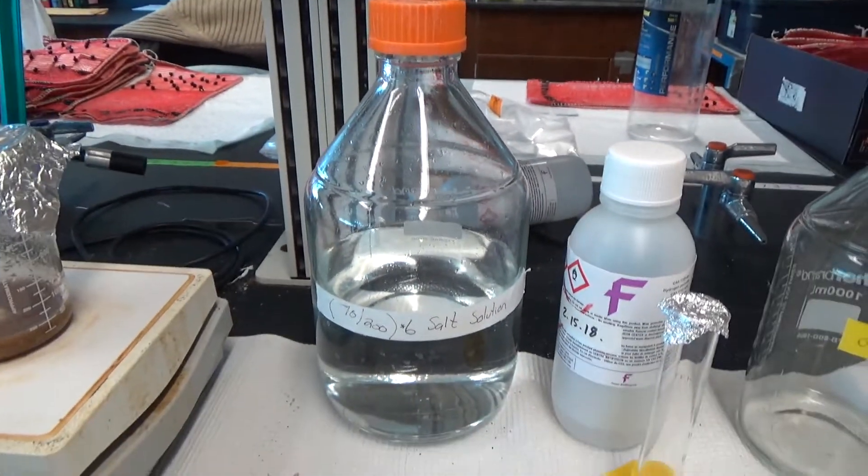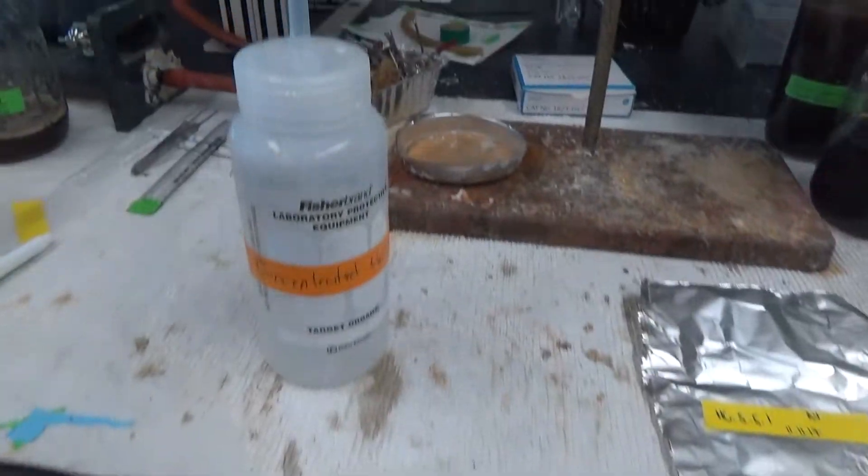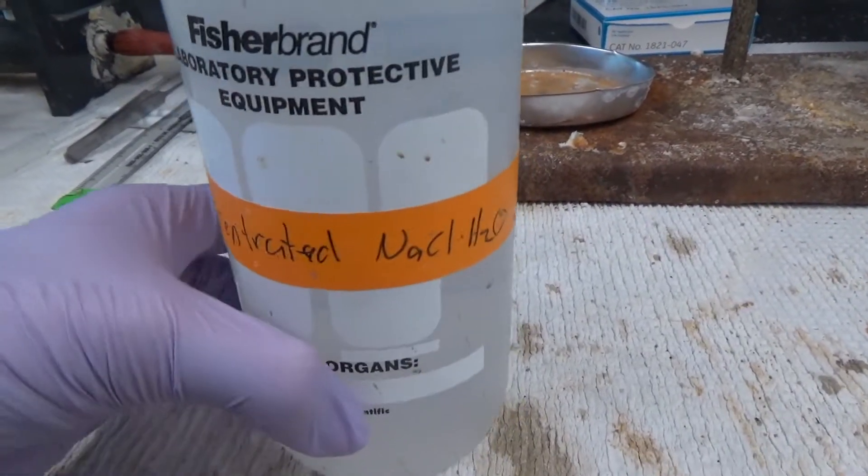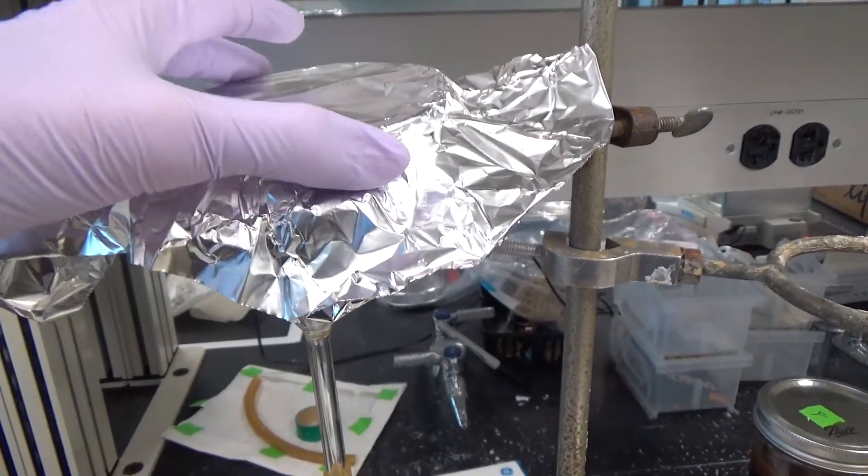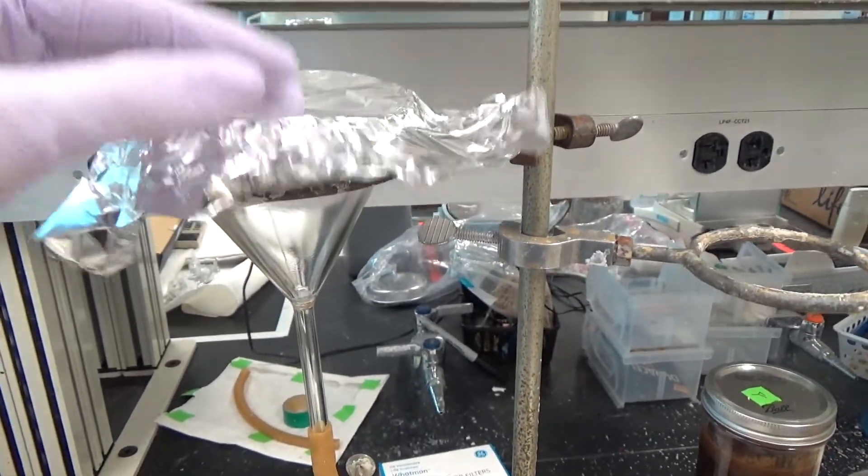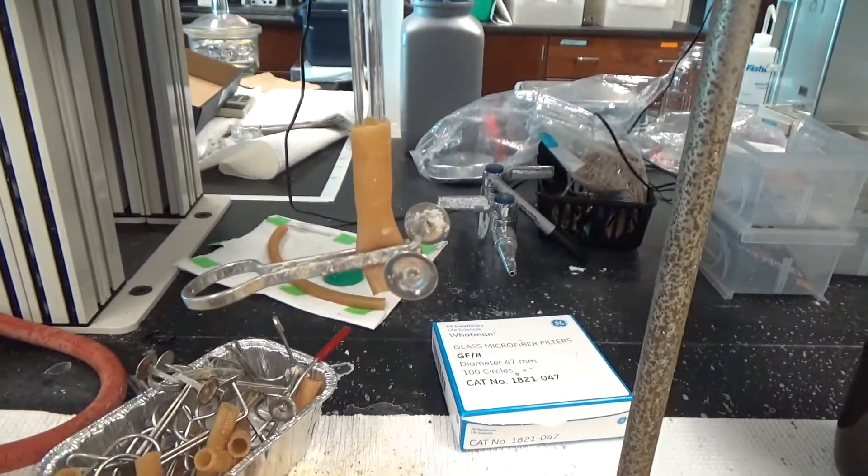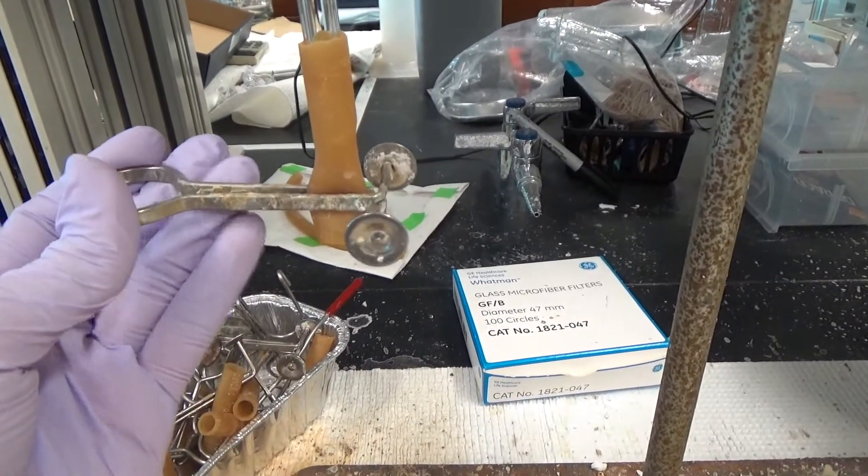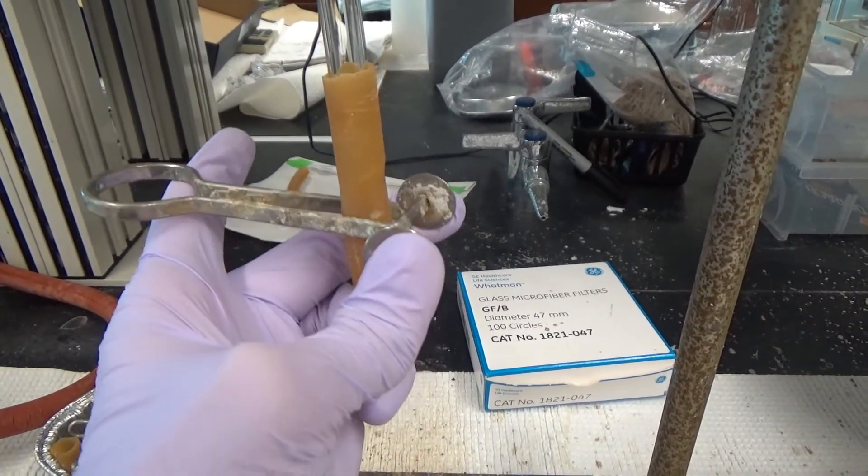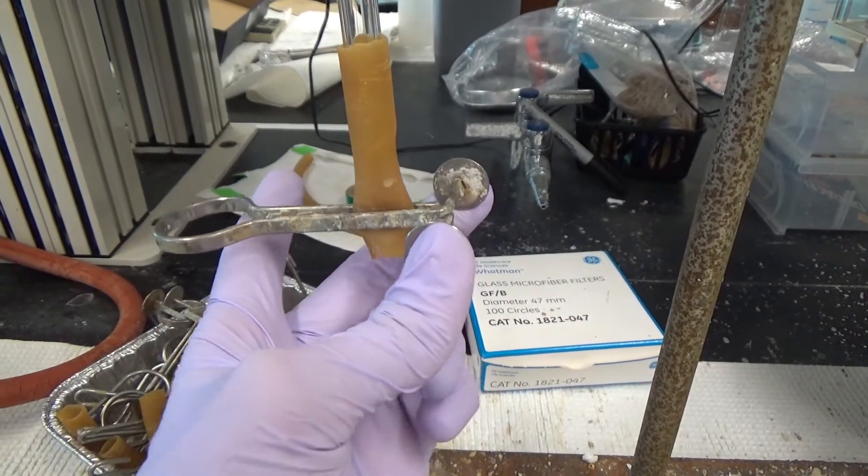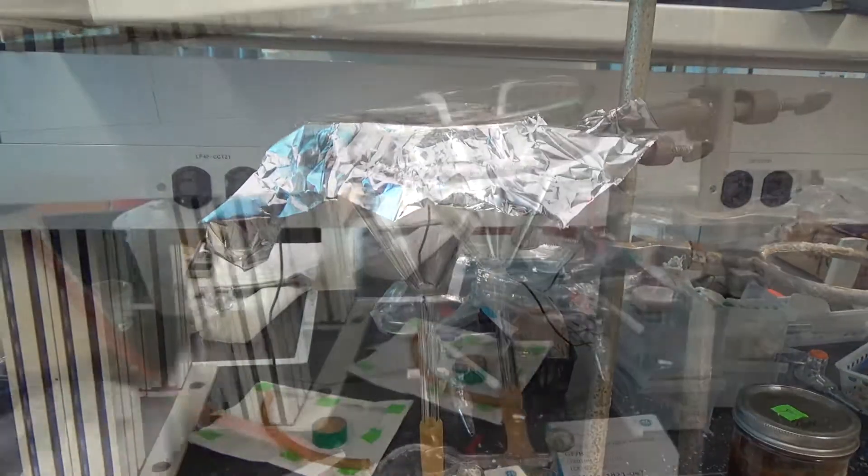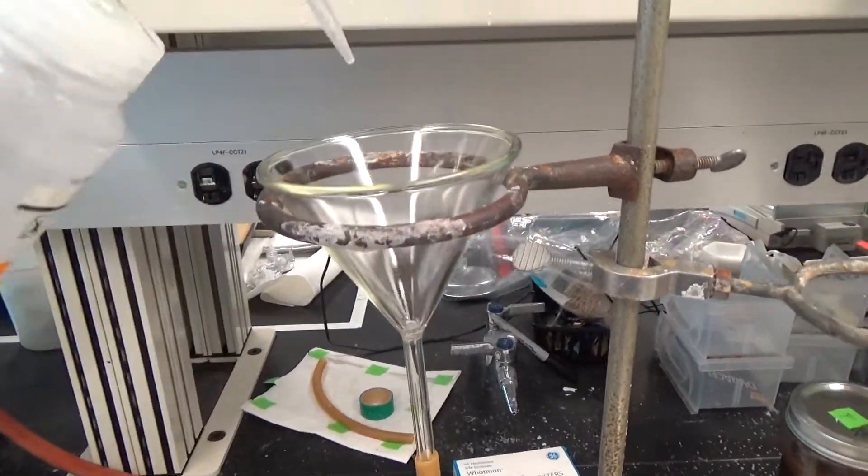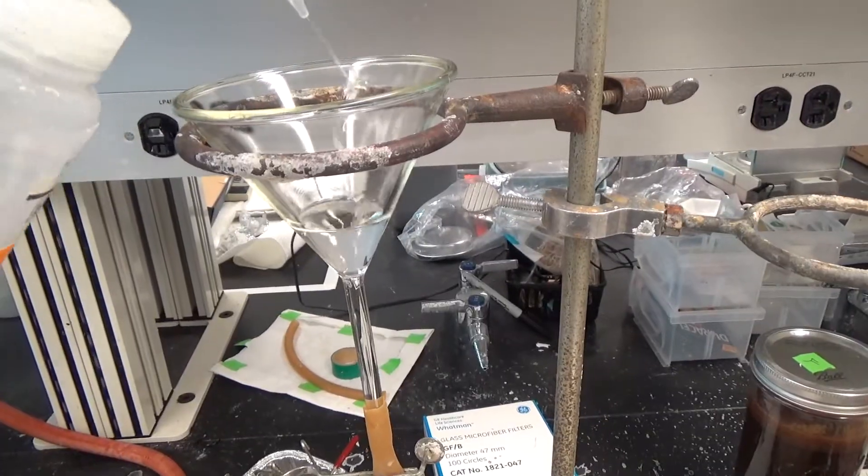During this part of the protocol, everything is rinsed with a salt solution so that the sample is not diluted. Set up a funnel on a ring stand and attach a rinsed rubber tubing to the bottom of the funnel. Add a pinch clamp to the rubber tube as well. Place an aluminum tin underneath in order to collect the sediment from your sample. Before putting your sample in the funnel, rinse the funnel with your salt solution.